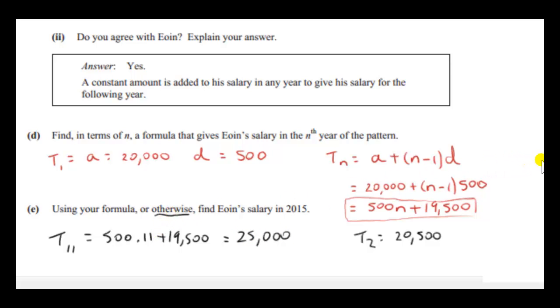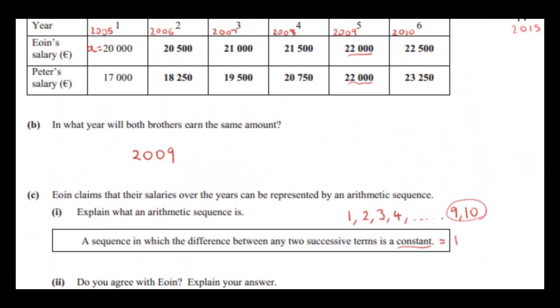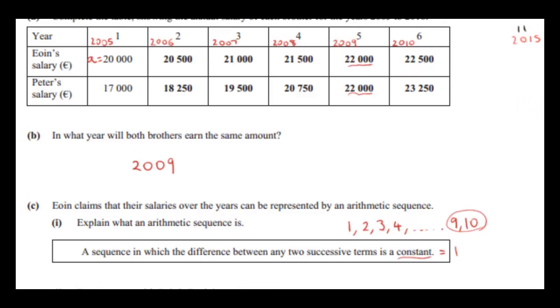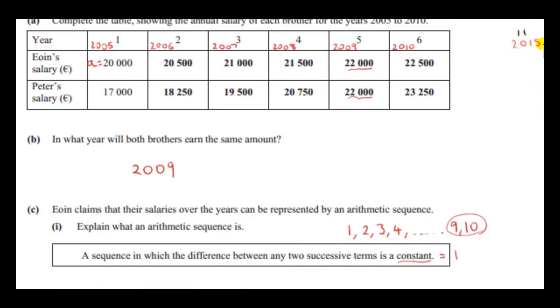Now there is another way of doing it, of course. And that just involves simply adding 500 euros onto Owen's salary for each year until we get to the year 2015. So for year seven Owen's salary will be 23,000. For year eight, it would be 23,500 and so on until we get to year 11. That's the year 2015, where we get 25,000.